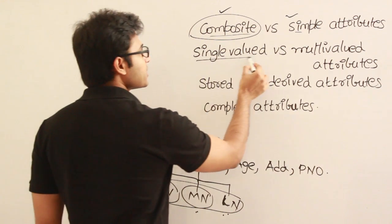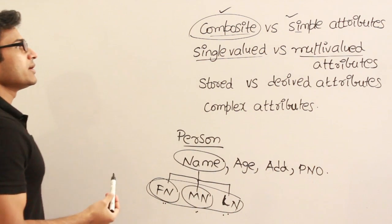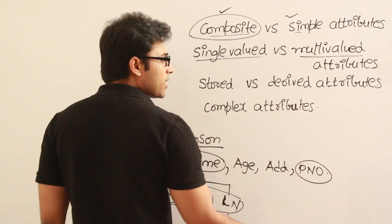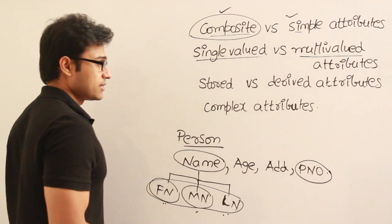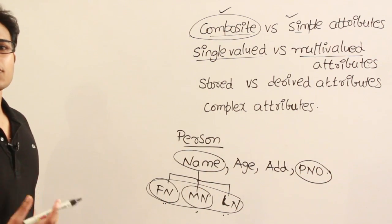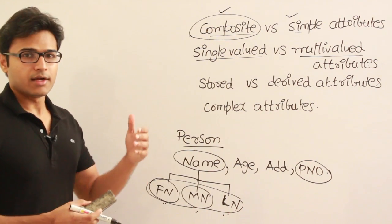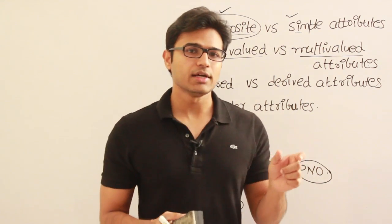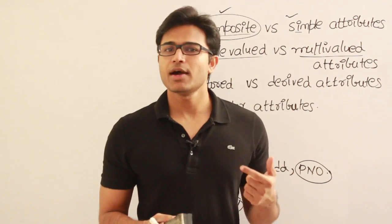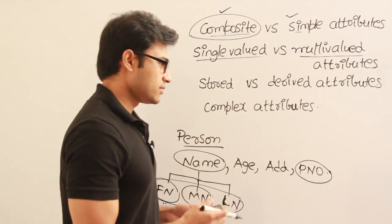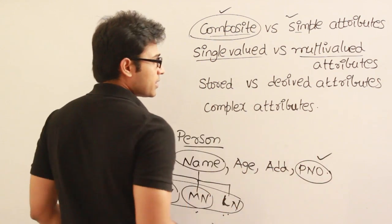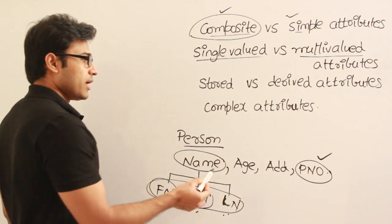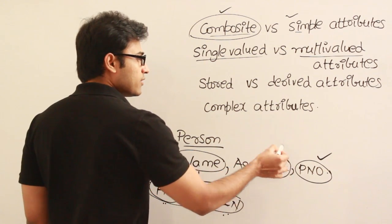Next is single-valued attribute versus multi-valued attribute. For example, phone number may be a multi-valued attribute because some person might have more than one phone number — maybe one is a daily number and another is a Hyderabad number. If you have two phone numbers, then that attribute is defined as a multi-valued attribute, which can take more than one value. Similarly, some people may have two houses, so address can also be a multi-valued attribute.